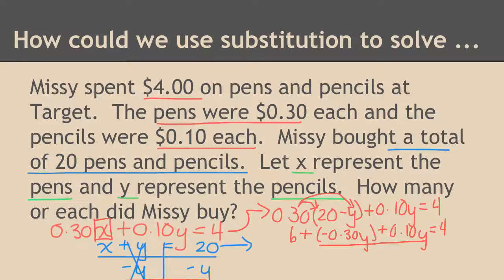Combine your like terms. 6 is not affected. Negative 30y plus a positive 10y is going to give me a negative 20 cents y equals 4.